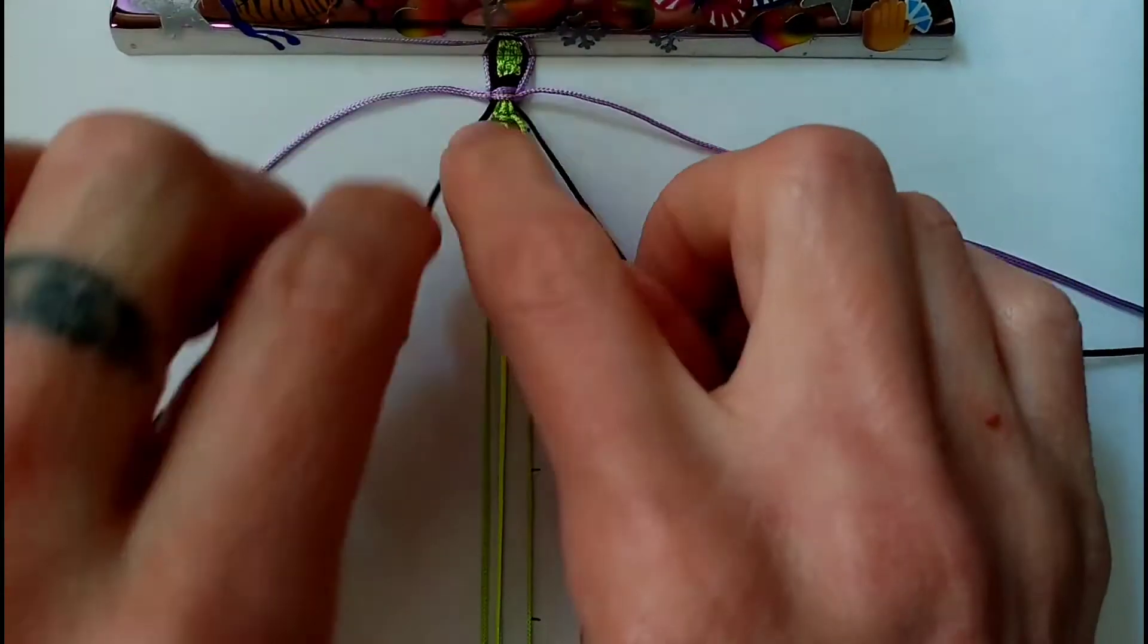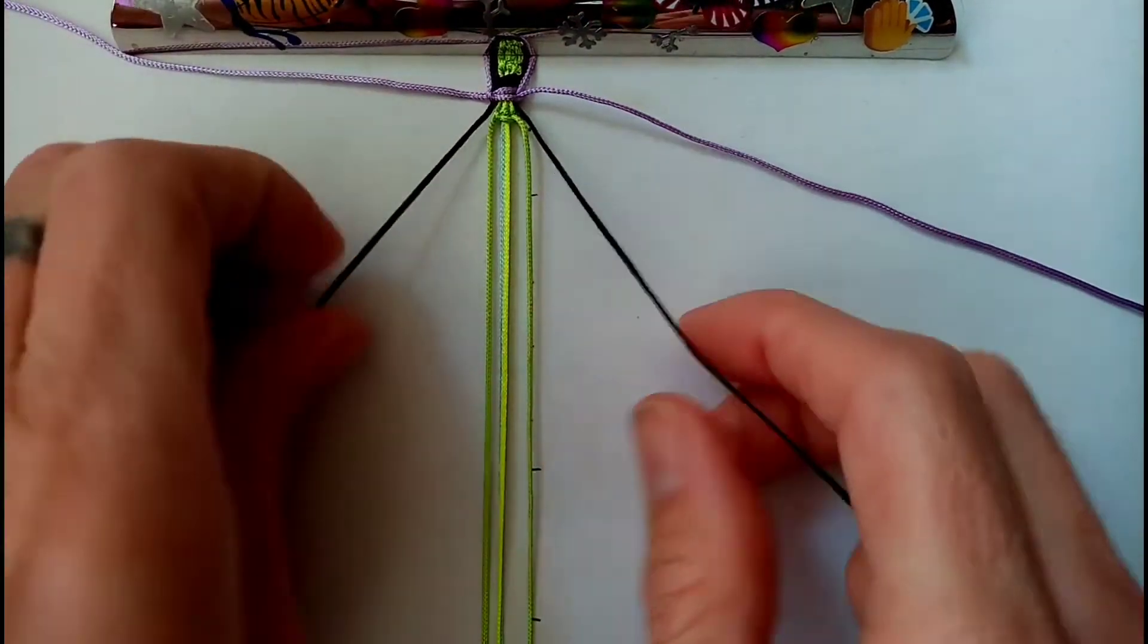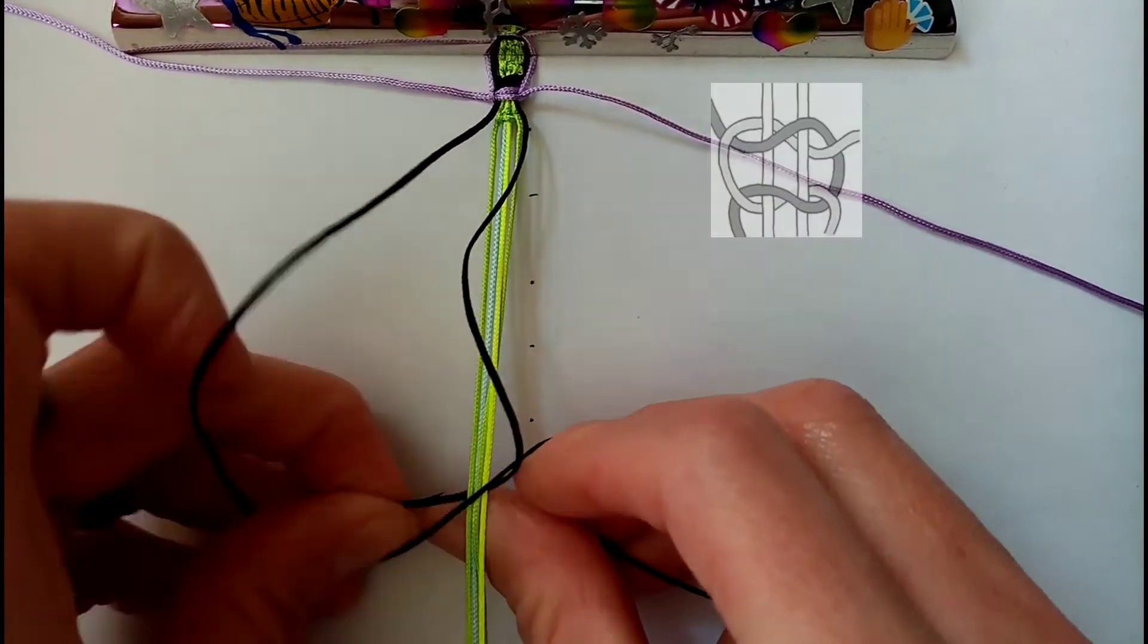You want to take the next two cords in positions 2 and 7 and again work a square knot over the rest of the cords in between.